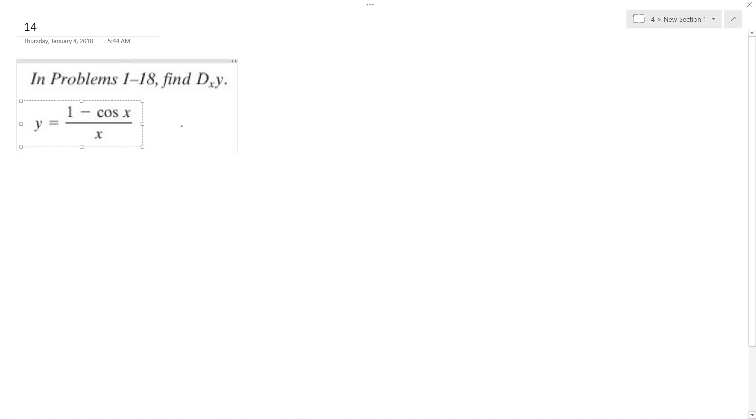All right, solving this problem. Use the quotient rule. So I'm going to take d/dx of (1 - cos x) times x minus d/dx of x times (1 - cos x), all over x squared.